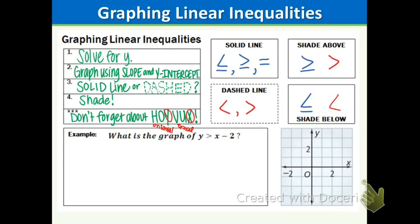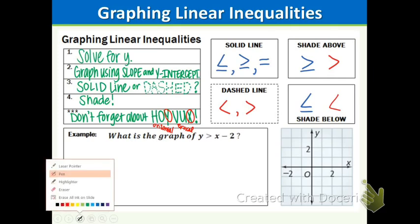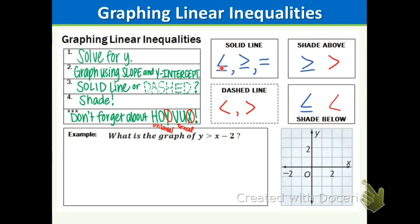If the symbols are less than or equal to, greater than or equal to, or equal to, then we have a solid line — no holes in the line. If we have a strict less than or greater than, we have a dashed line. If we have greater than or equal to or greater than, we shade above, because the numbers are bigger. If we have less than or equal to or less than, we shade below because the numbers are smaller. Remember, we want to get the y by itself, and in this example the y is already by itself.